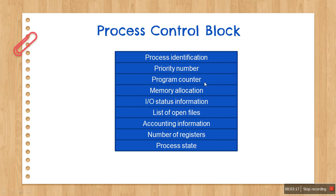Then we have the program counter, which indicates the address of the next instruction to be executed for the current process. Suppose you have a set of instructions and you are executing a particular instruction — the program counter tells you which would be the next instruction. Then there is memory allocation, which contains the value of base registers, limit registers, and page tables, depending on the memory system used by the operating system. We are going to study each one of these in detail in the lecture related to memory management.